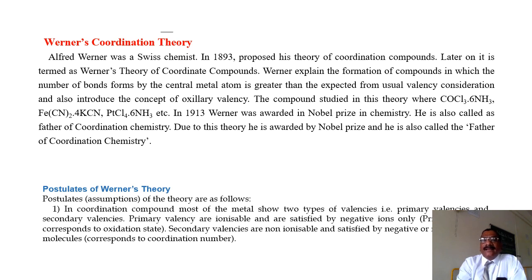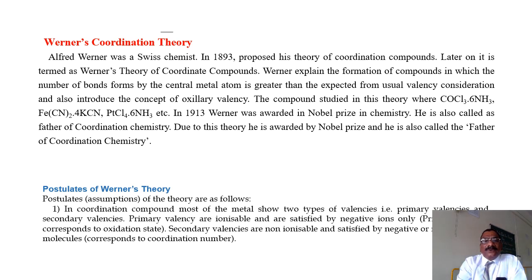Primary valencies are ionizable and are satisfied by negative ions only. Secondary valencies are non-ionizable and are satisfied by negative or neutral molecules or ligands. Secondary valency corresponds to the coordination number.